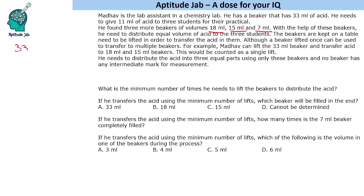So he has 33 ml, 18, 15 and 7. He needs to distribute 11 ml to each of these. Now the beakers are kept on a table and need to be lifted in order to transfer the acid in them. If you have to transfer from one to another, you will have to lift and transfer. Although a beaker lifted once can be used to transfer to multiple beakers.